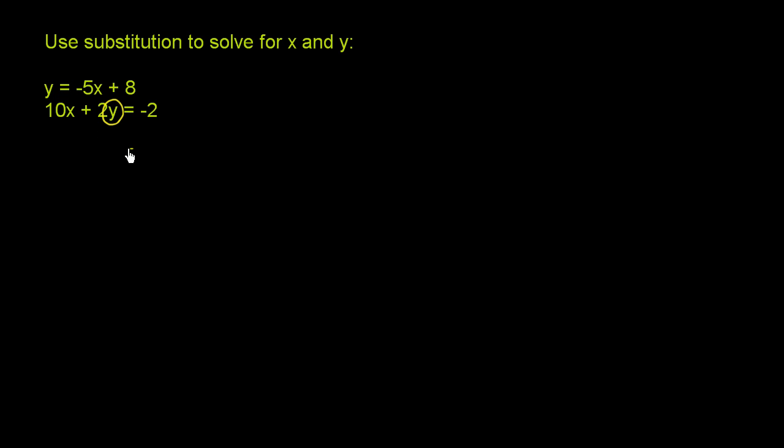So everywhere we see a y, we can substitute it with negative 5x plus 8, because that's what the first constraint tells us. y is equal to that. I don't want to be repetitive, but I really want you to internalize that's all it's saying.